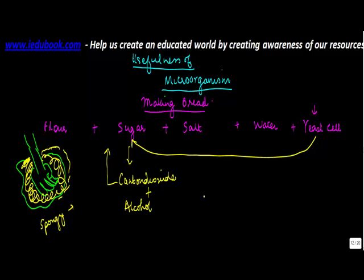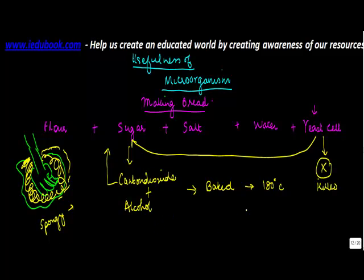Once this is done, this dough is baked at a particular temperature, which is normally around 180 degrees centigrade. At that point, the yeast cell is killed and fermentation is stopped at 180 degrees.